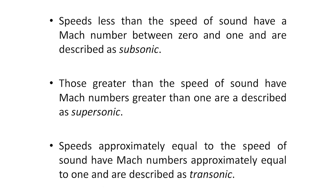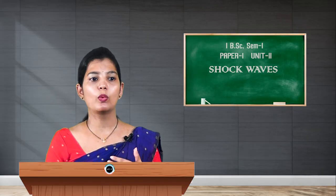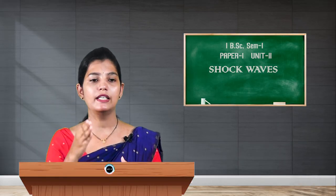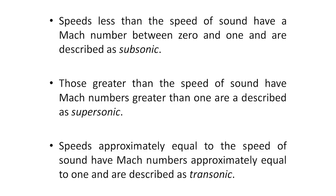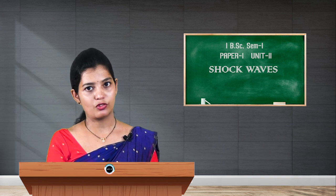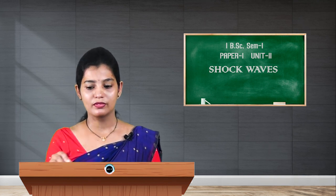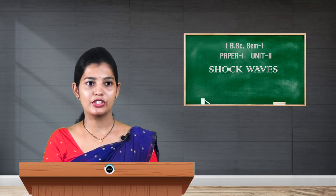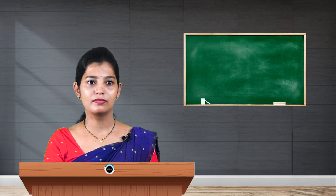If speeds are approximately equal to the speed of sound, the Mach number is approximately equal to 1, and such flows are described as transonic. In that case, v equals c, so dividing the two equal values gives 1. This concludes today's discussion on shock waves and Mach number.